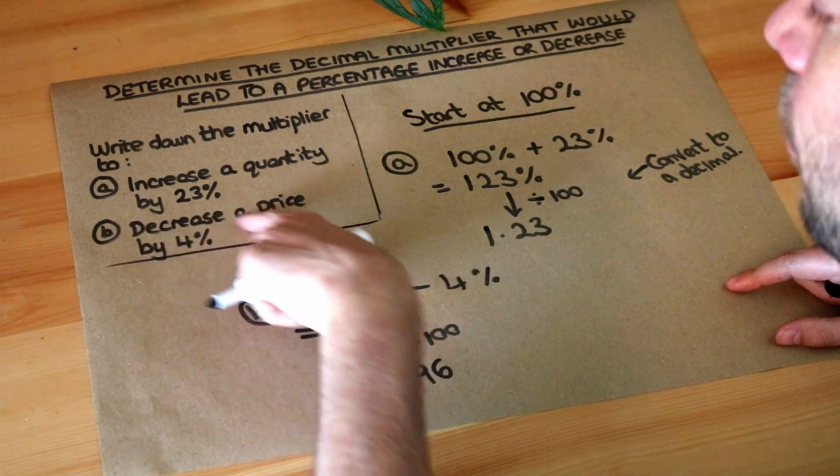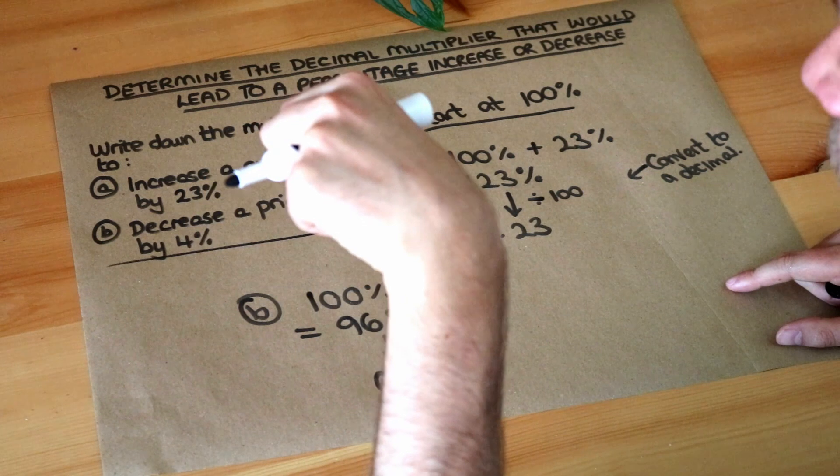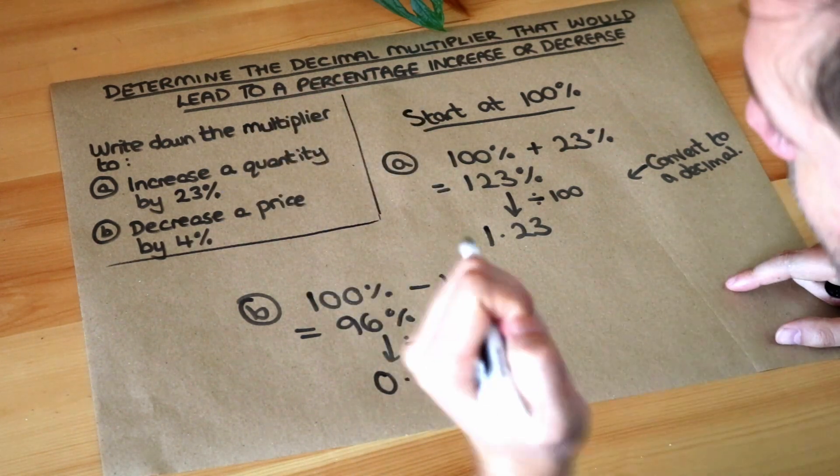And that's indeed what would happen. If you decrease the price of something by 4%, it becomes slightly less in value. So that number feels about right.